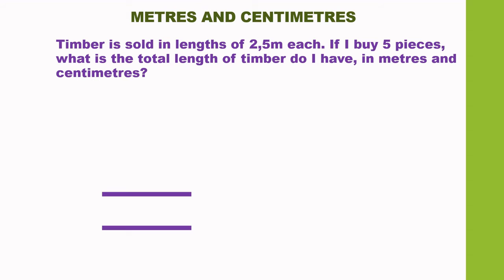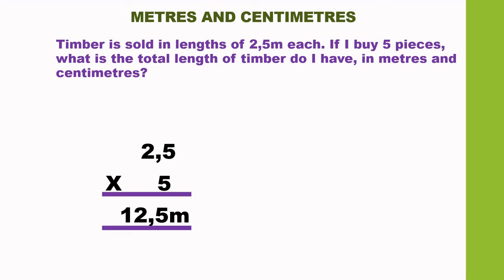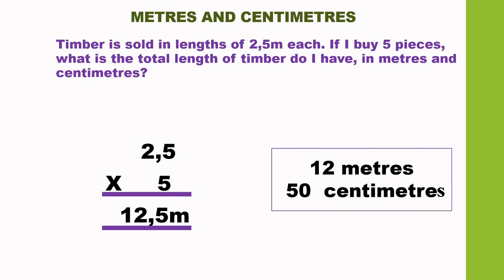Timber is sold in lengths of 2.5 meters each. If I buy five pieces, what is the total length of timber in meters and centimeters? We are going to multiply 2.5 by 5 to get the total length, which is 12.5 meters. The question requires us to give the answer in meters and centimeters, so 12.5 is 12 meters and 50 centimeters.